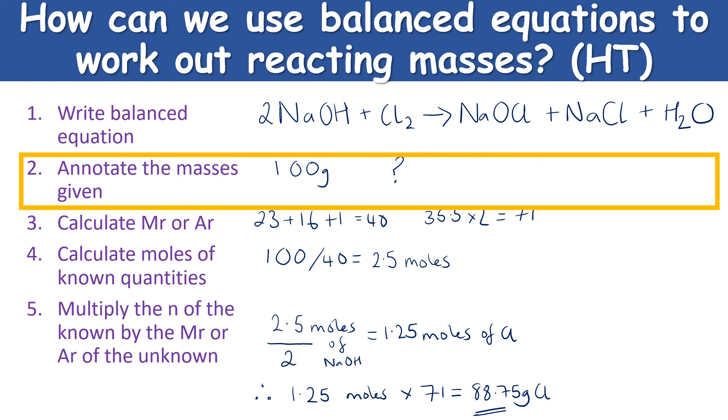Step two: annotate the masses that you have been given. So they will normally tell you in the question one of the reactants or products that they have the mass for and the one that they want you to find out. So in this particular example, they've given me the mass of the sodium hydroxide, which is 100 grams, and they want me to find out the mass of chlorine that will react with it.